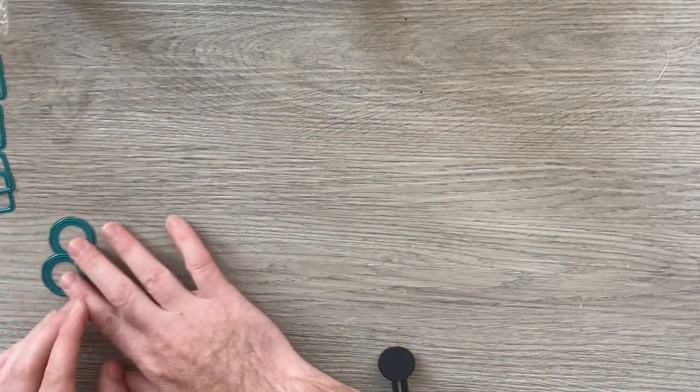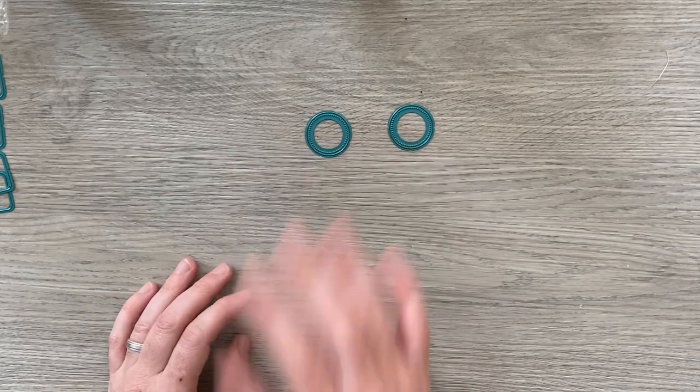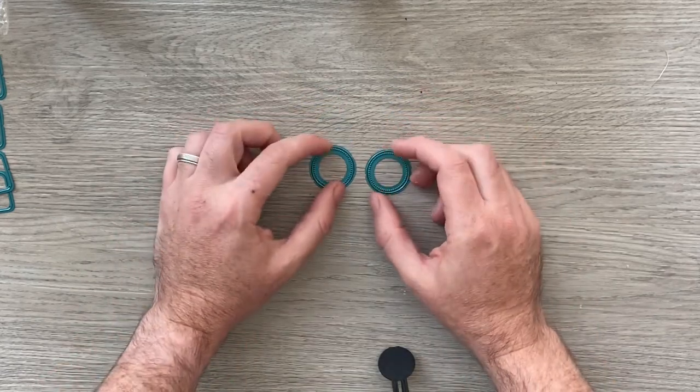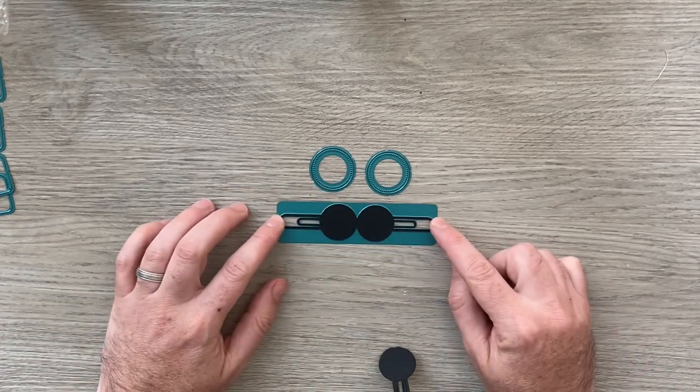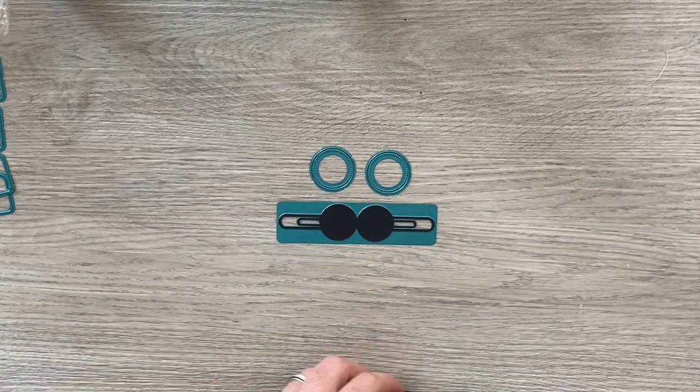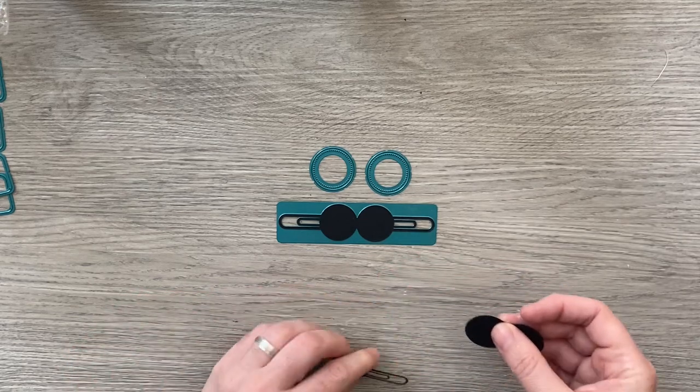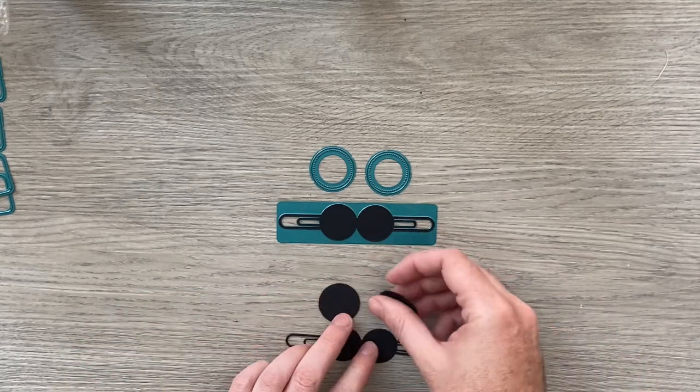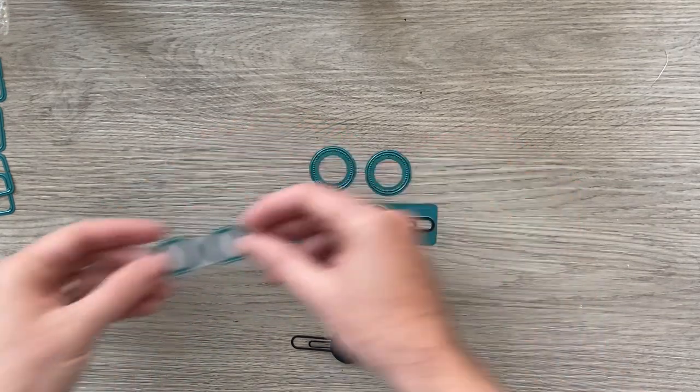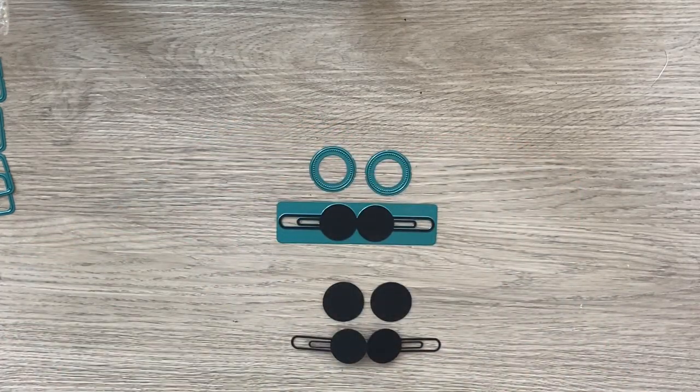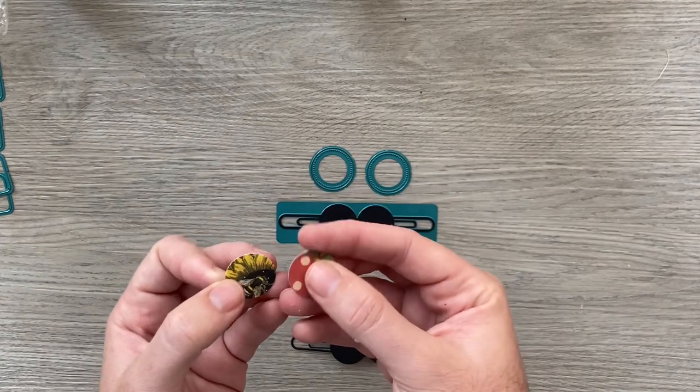So to make a paper clip you choose the shape you want and you pick the largest one. And you cut that out of your card stock. So I've already done that. So here's one and two pieces.